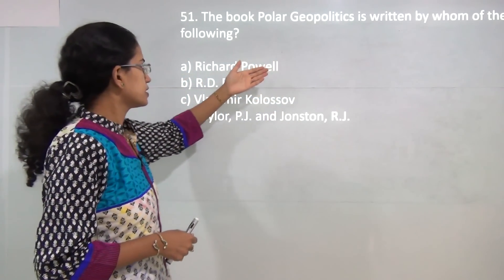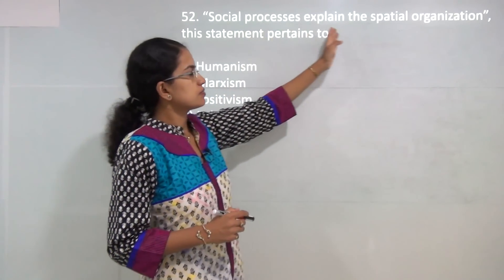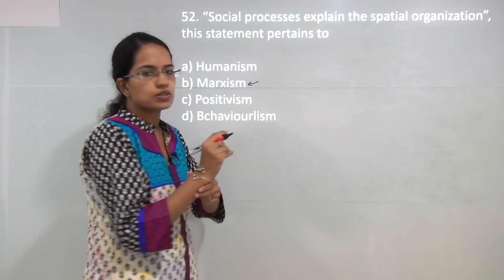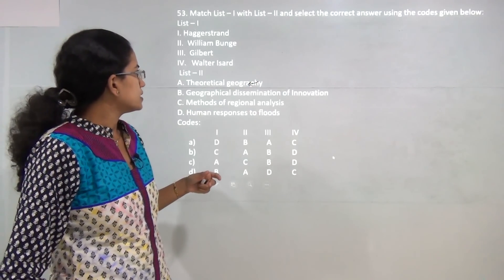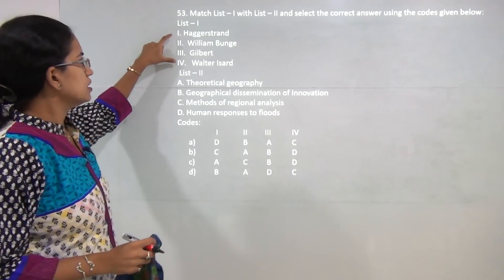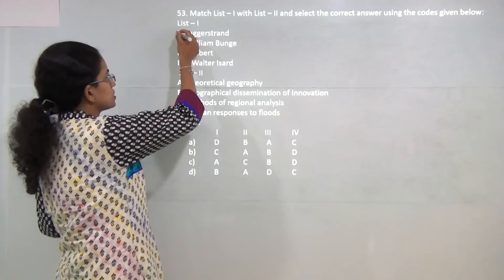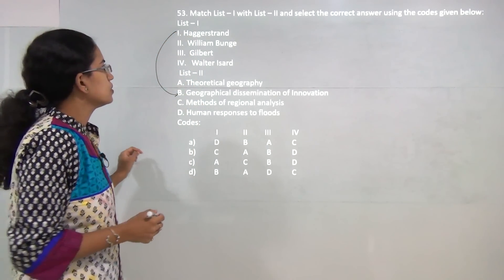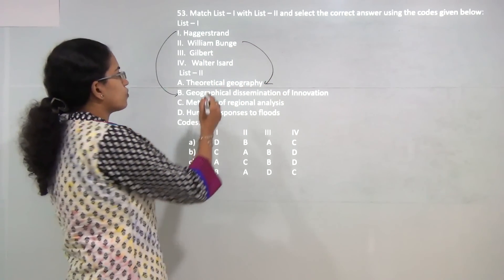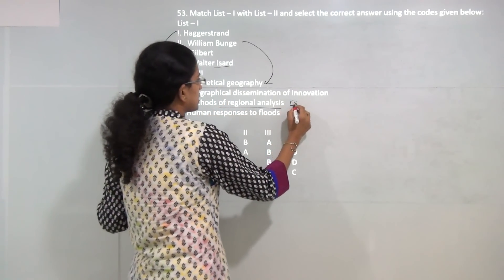The first question: Polar Geopolitics is a book written by Powell and Dixit, so the correct answer is A. Next, social processes explain spatial organization as given in the concept of Marxism. We've already talked about Marxism in one of the lectures. Next, match the work with the author: Hagerston worked on diffusion of innovation, William Bunge is known for his theoretical geography, Walter is known as the father of regional science for methods of regional analysis, and finally Gilbert gave the concept of human response to floods.